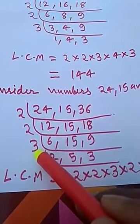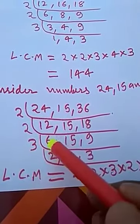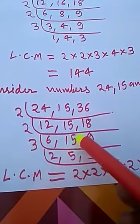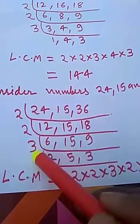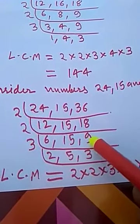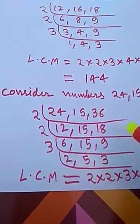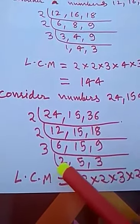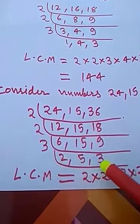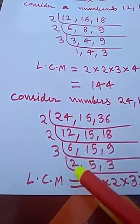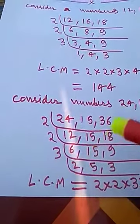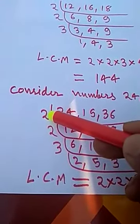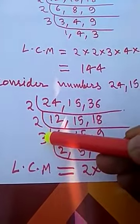Now we have 6, 15, and 9. We select the number 3. 3 divides 6 twice, 3 divides 15 five times, and 3 divides 9 three times. Now there are no more numbers that will divide at least two of the remaining values, so we find the LCM as the product of the divisors.